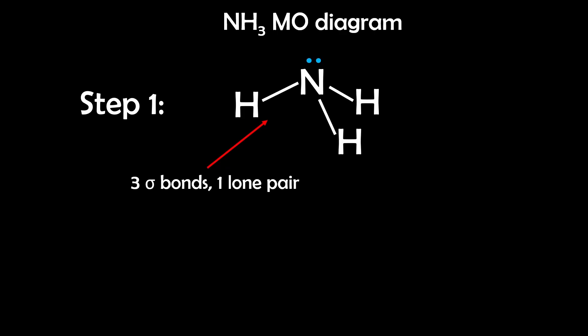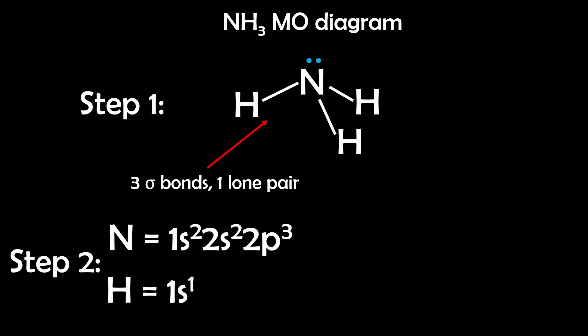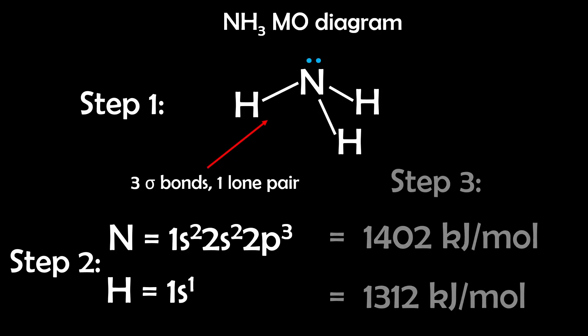Let's finish with one last example: ammonia, NH₃. This one's more complex and mainly for demonstrative purposes, but it's a great way to see how molecular orbitals evolve into 3D models. From the Lewis structure and electron configurations, hydrogen's 1s orbital will overlap with nitrogen's 2s and 2p orbitals to form bonds. Step 3: Hydrogen has a lower ionization energy, so its 1s orbital is actually higher in energy than nitrogen's 2p orbitals — so hydrogen sits higher on the diagram.